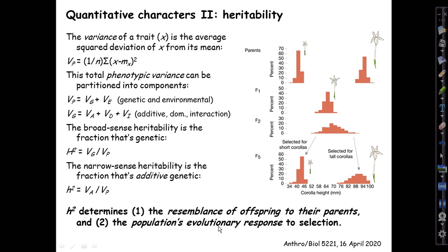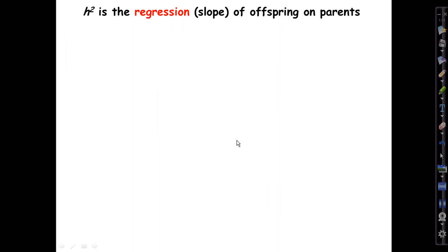It's written little h², and it's the one that does the useful work for us. That's because little h² determines both the resemblance of offspring to their parents and the population's evolutionary response to selection acting on the trait.